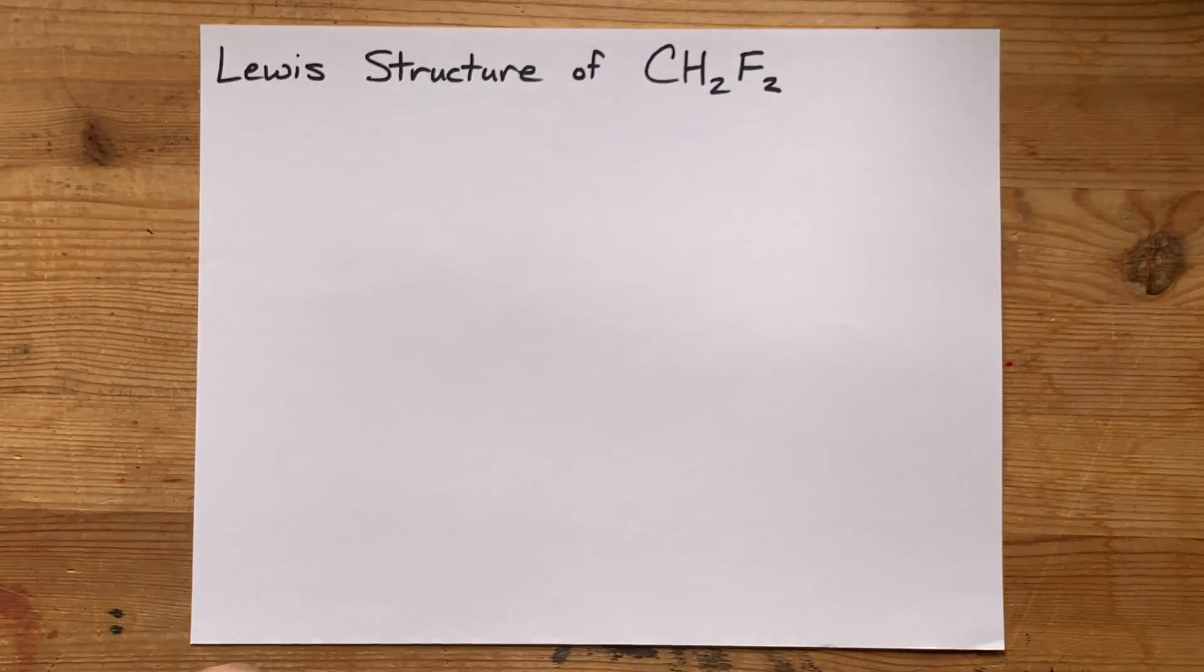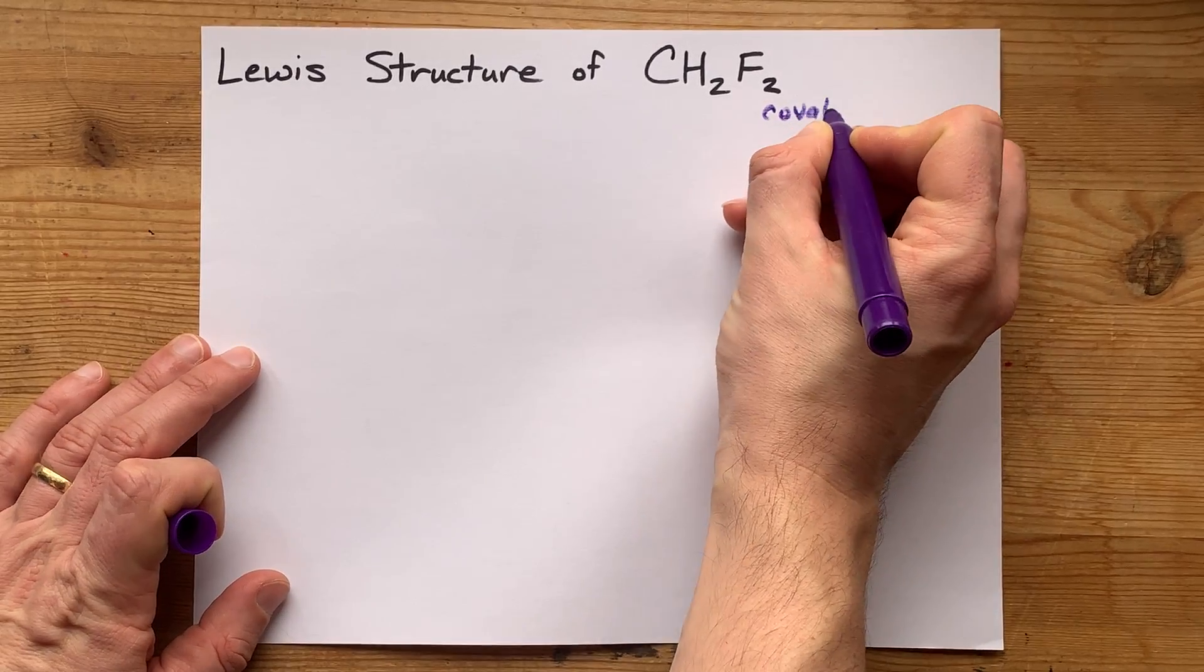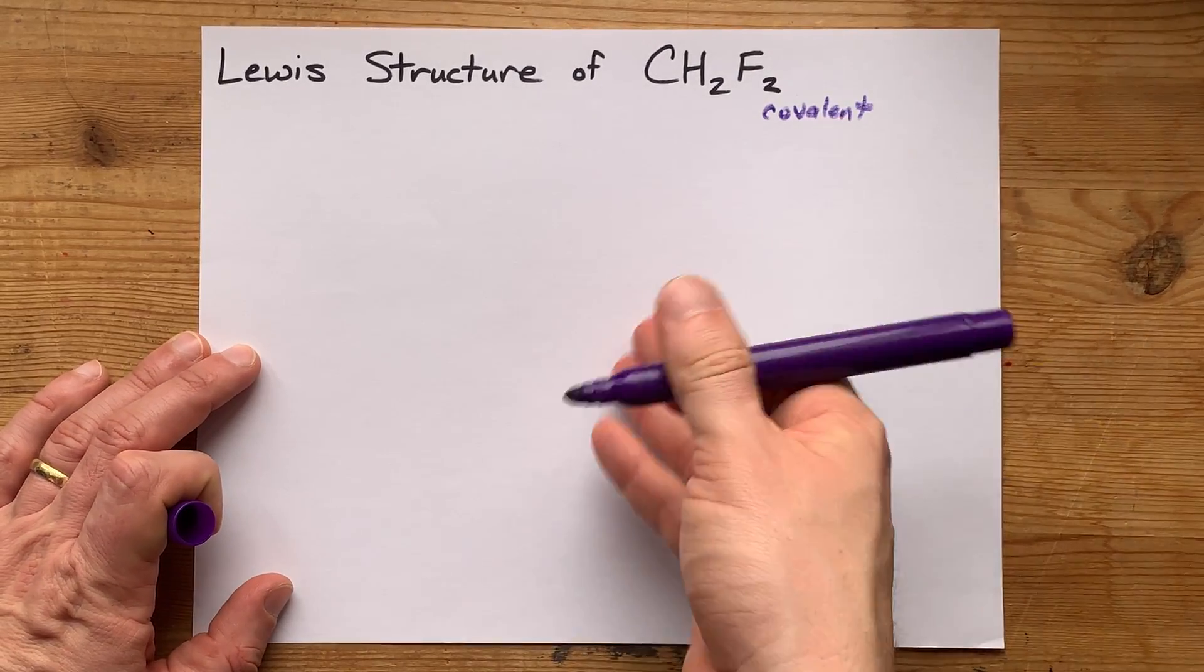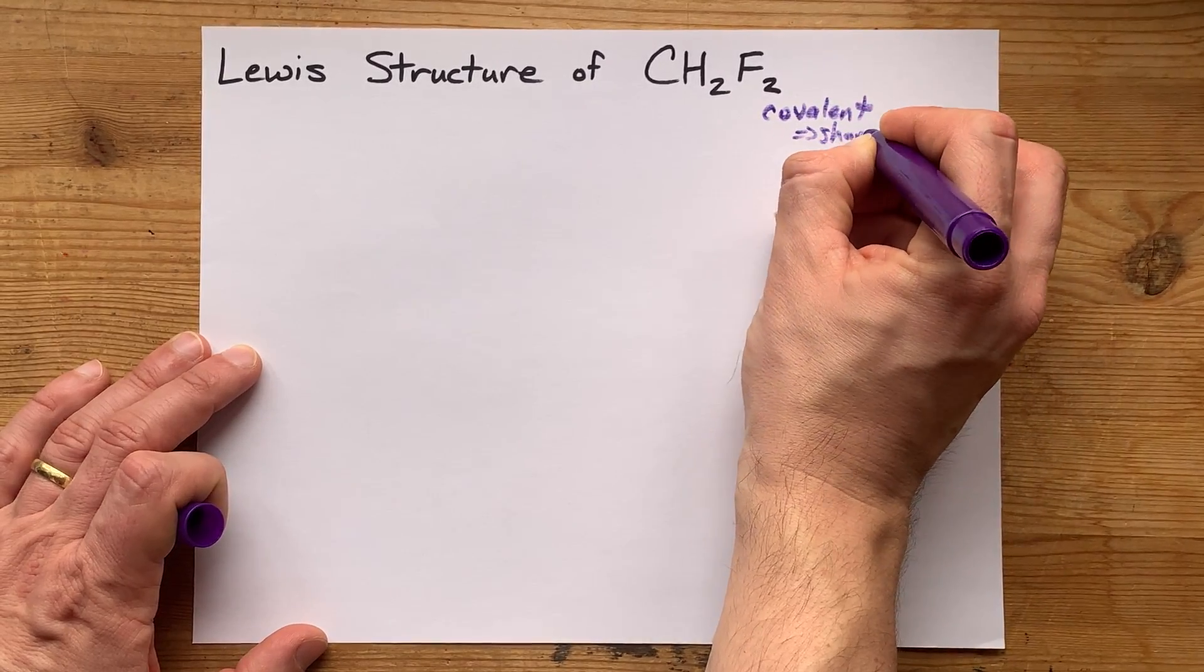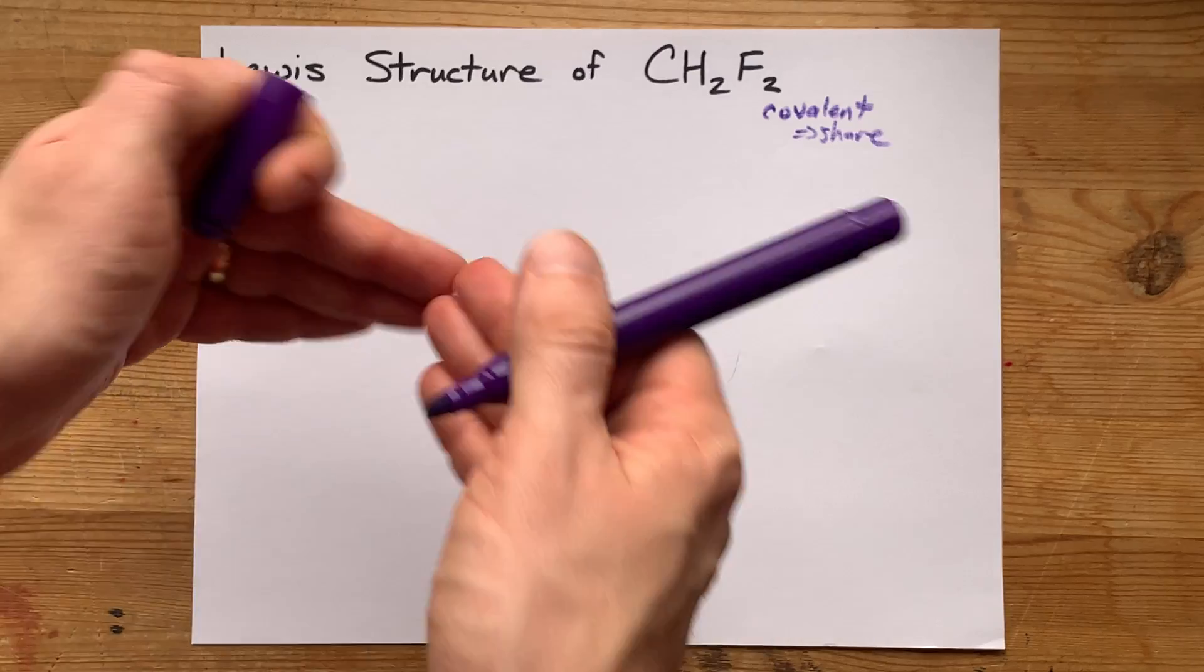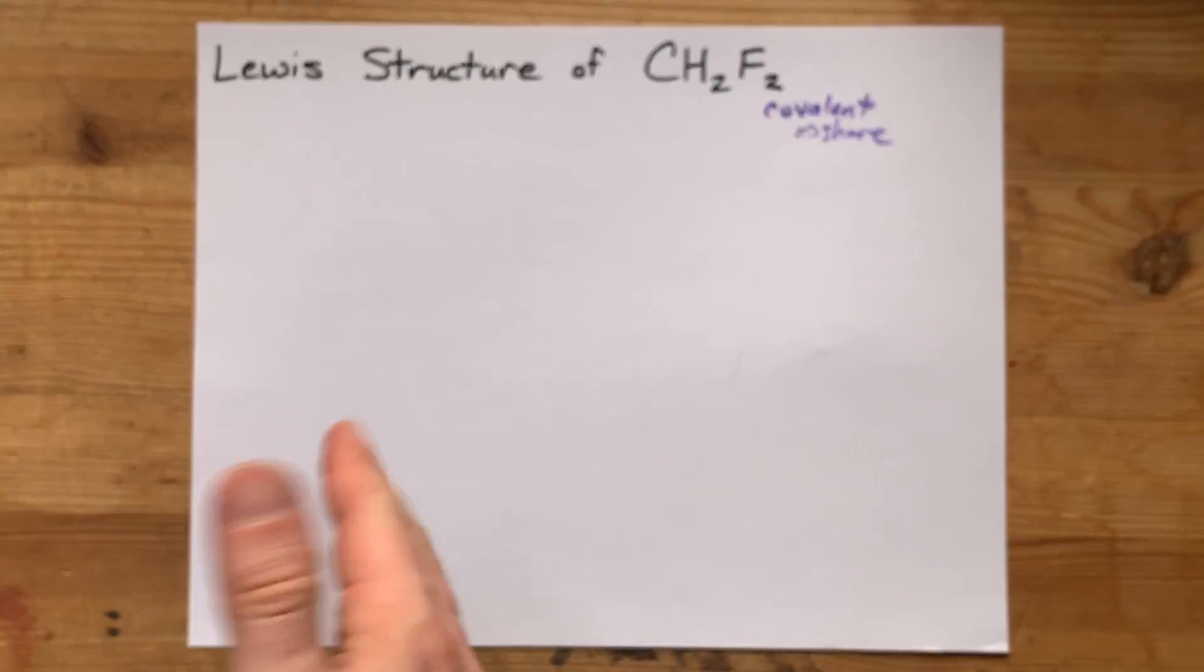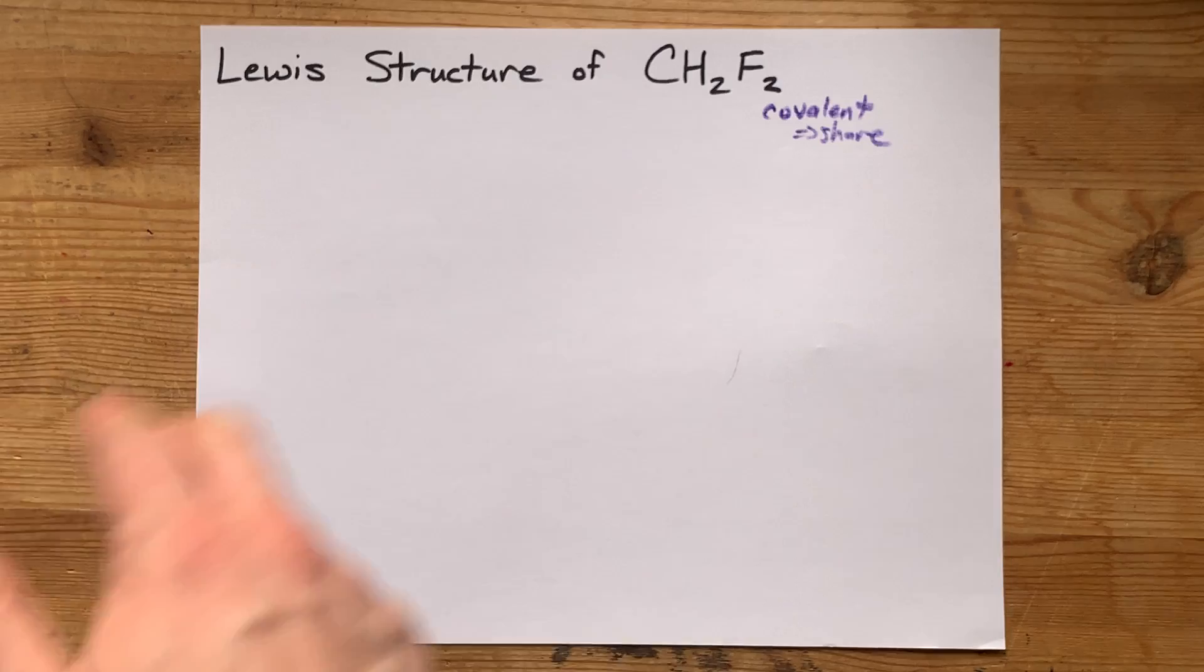Because these are all non-metals, they're going to be covalently bonded, as opposed to ionically bonded, and that means they're going to share electrons instead of it being a transfer from one to the other. So we're going to have covalent bonds between the atoms.